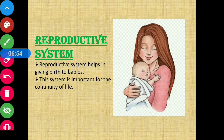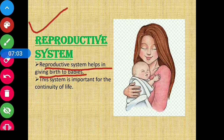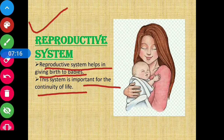The eighth organ system present in our body is the reproductive system. The reproductive system helps in giving birth to babies, and this is important for the continuity of life — so that human species and each species can continue. The system responsible for that is the reproductive system.